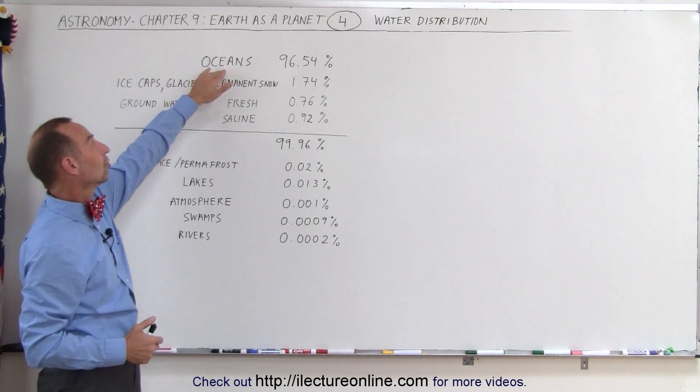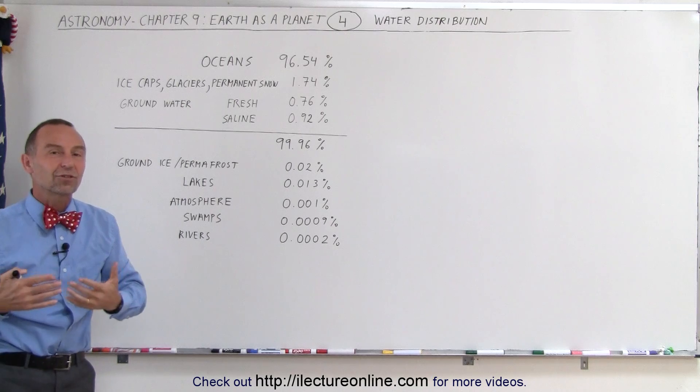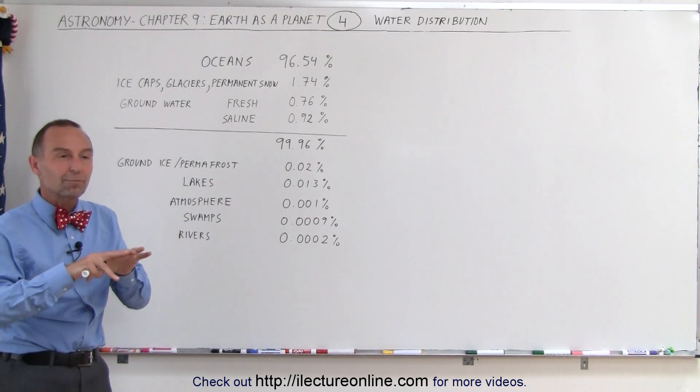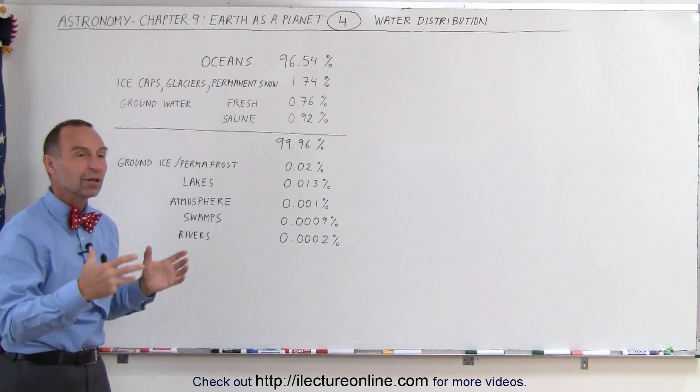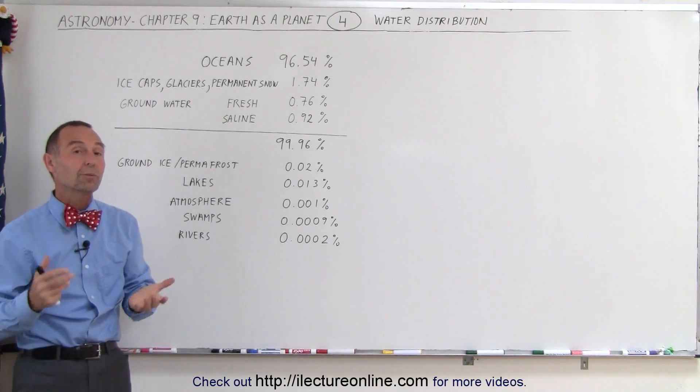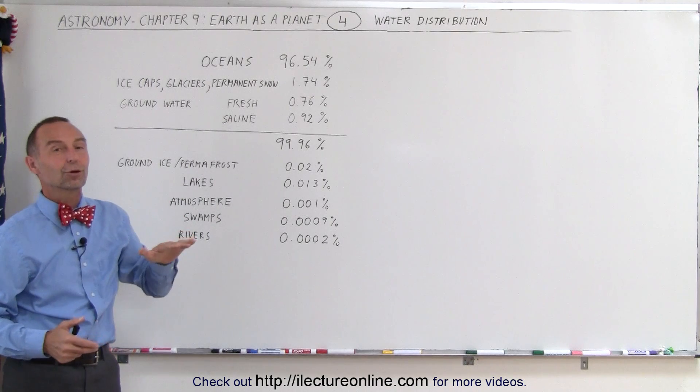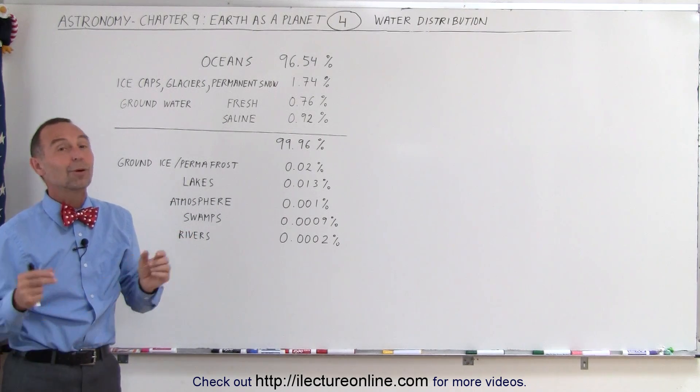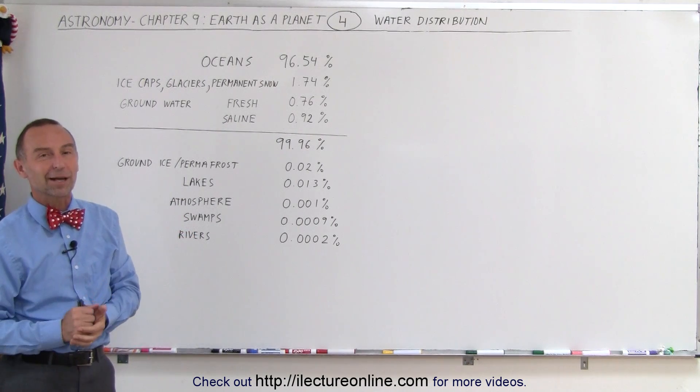But again, it's the oceans that cause us to have such a tremendous planet with such uniform temperature and climate that are very stable and very nice for us to have life on earth the way we do. If it wasn't for the oceans, life on earth would be very different. We probably wouldn't be here talking about it.